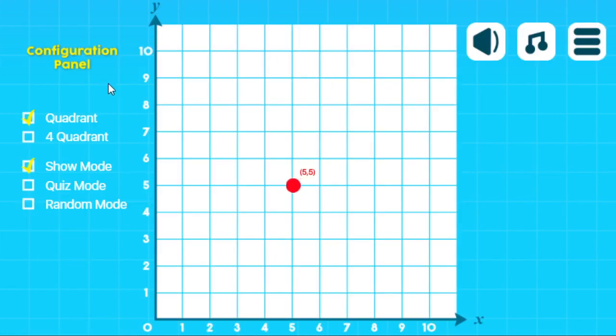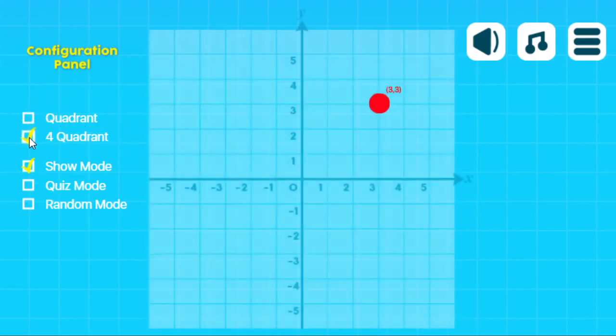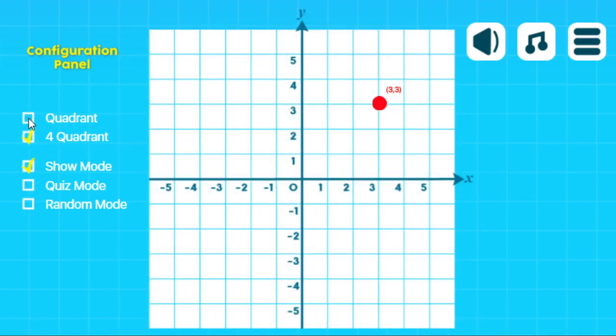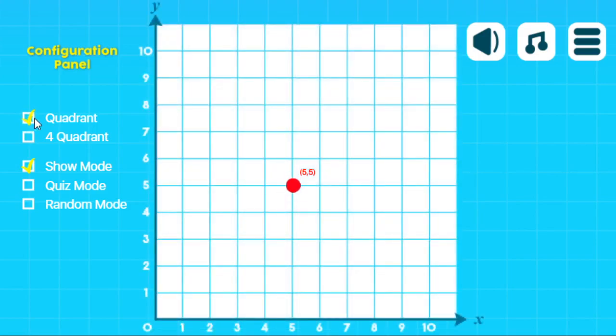Play will take you to the teaching tool, and here you can choose if you want to play on four quadrants or one quadrant. And also you have three modes: show, quiz, and random, and we'll take a look at each one of those, but you can see you just click to get to the different modes.